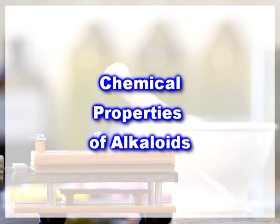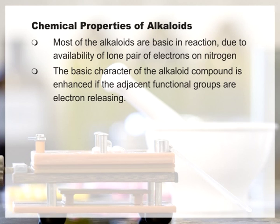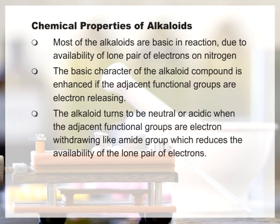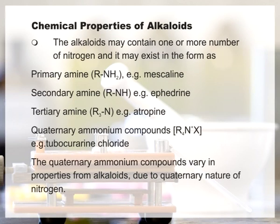Chemical properties of alkaloids: Most alkaloids are basic in reaction due to availability of a lone pair of electrons on nitrogen. The basic character is enhanced if adjacent functional groups are electron-releasing. The alkaloid tends to be neutral or acidic when adjacent functional groups are electron-withdrawing, like an amide group, which reduces the availability of the lone pair of electrons. Alkaloids exhibiting basic characters are sensitive to decomposition and cause problems during storage. The alkaloids may contain one or more nitrogen atoms and may exist in the form of primary amines (formula RNH₂), for example mescaline.